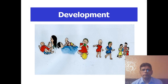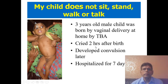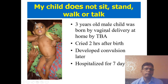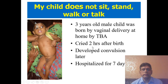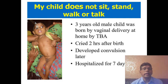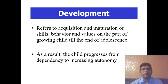Now, development. This child of 3 years does not sit, stand, walk, or talk. The child was born by assisted delivery at home with a traditional birth attendant, cried two hours after birth, had a convulsion, and was hospitalized for seven days — so the child had brain damage. Development refers to acquisition and maturation of skills, behavior, and values on the part of the growing child till the end of adolescence. As a result, the child progresses from dependency to increasing autonomy.